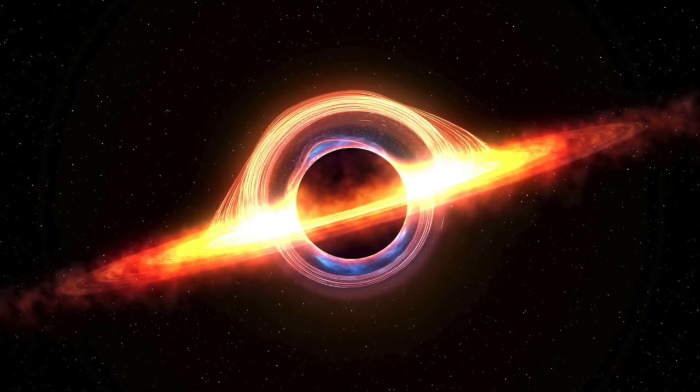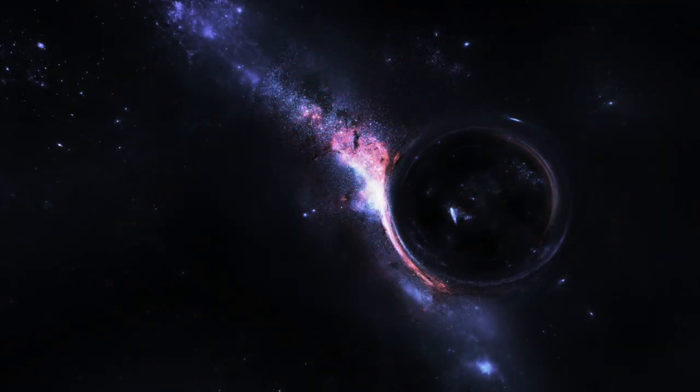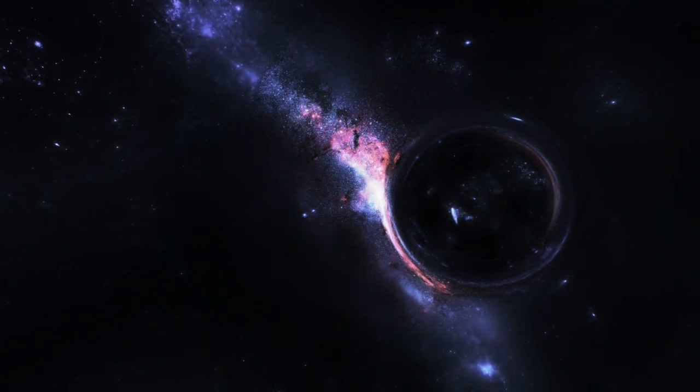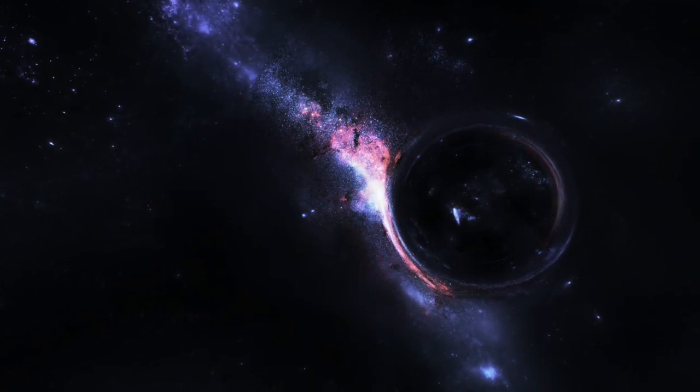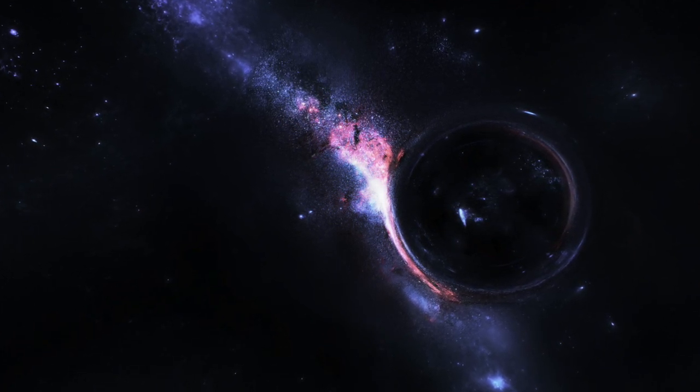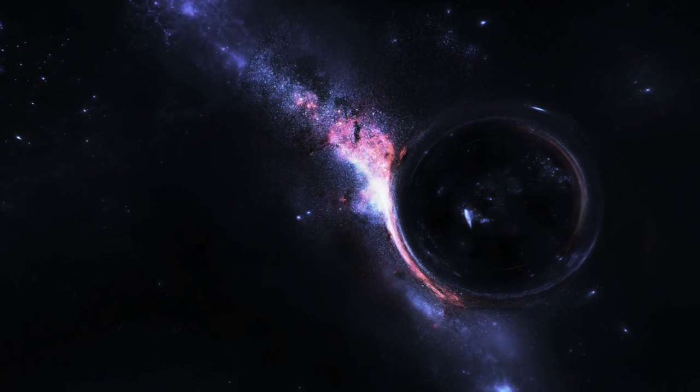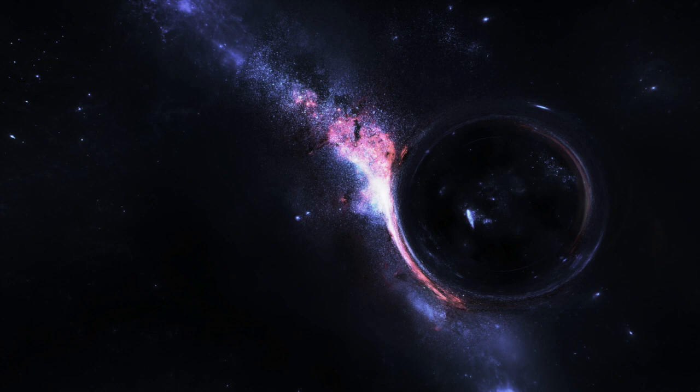What some people may not be aware of is how big these black holes are. For example there is a black hole that's known as SDSSJ and this black hole is so massive that it's more than 12 billion times the mass of our sun. Researchers began to wonder how could such a large singularity form if our universe is believed to be only 13 billion years old.